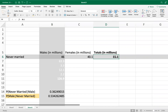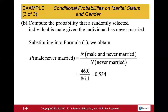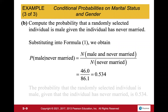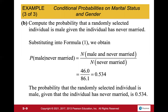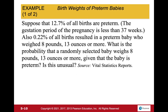The second probability is closer to 50%. The probability that a randomly selected individual is male, given that the individual has never married, is 0.534.